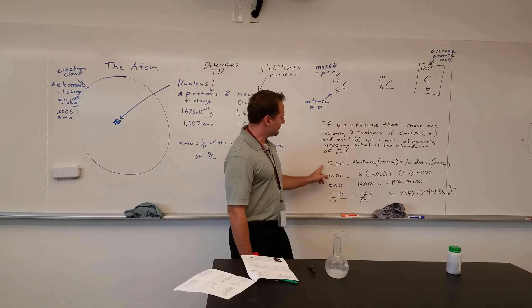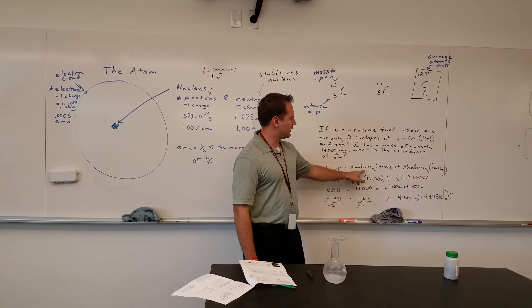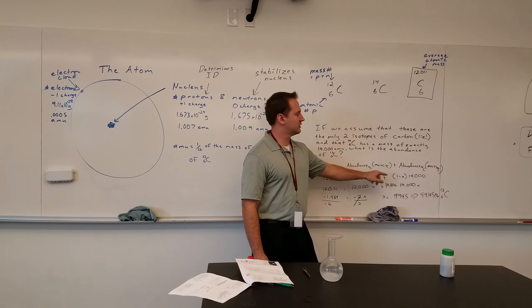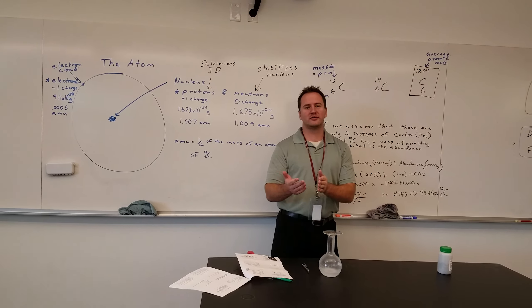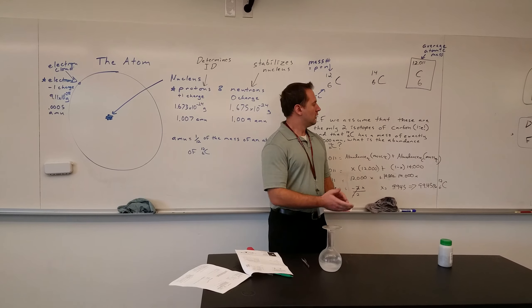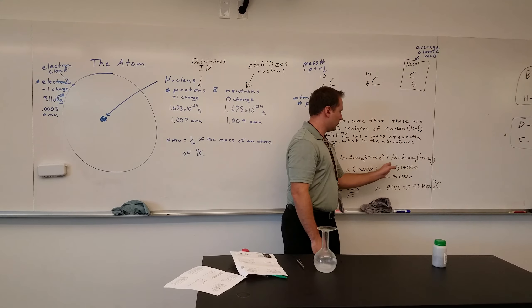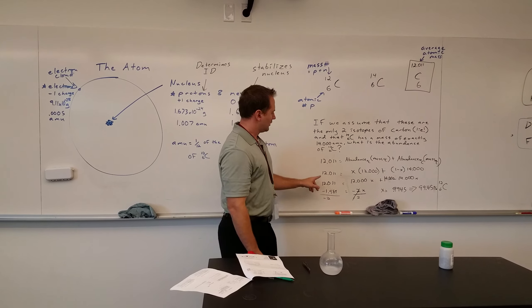So, here's what we can do. The average atomic mass is going to equal the abundance of one isotope times its mass, plus the abundance of the other isotope times its mass. Now, if there's more than two isotopes, which there really are for carbon, we would just keep going with more of these. But, in doing this, what we do is we set this to represent x as the abundance of carbon-12, because that's what we're looking for.